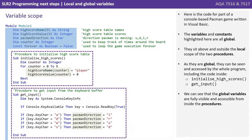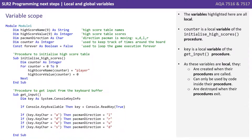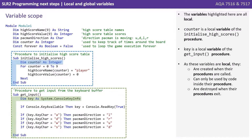We can see that the global variables are fully visible and accessible from inside the procedures. The variables highlighted here are all local. Counter is a local variable to the initialize high scores procedure, and key is a local variable of the get input procedure. As these variables are local, they're created when the appropriate procedures are called, can only be used by code inside their associated procedures, and they're destroyed when their procedures exit.